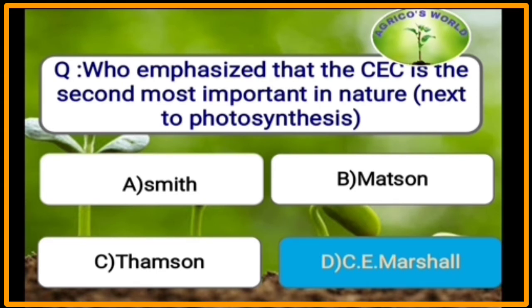Who emphasized that cation exchange capacity is the second most important process in nature, next to photosynthesis? C.E. Marshall emphasized that cation exchange capacity is the second most important in nature, next to photosynthesis.